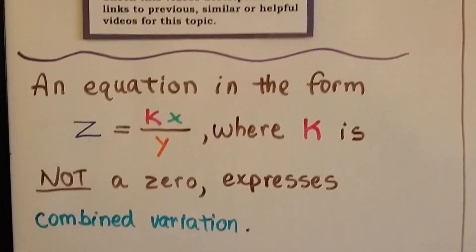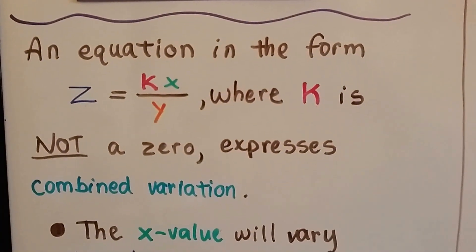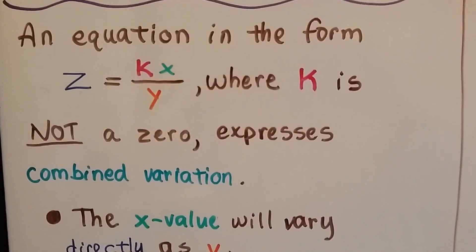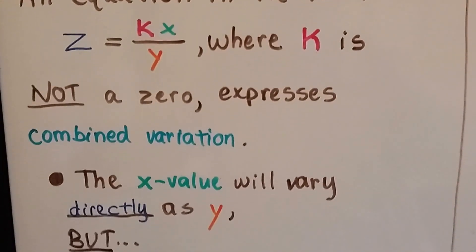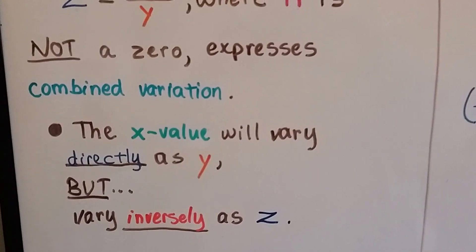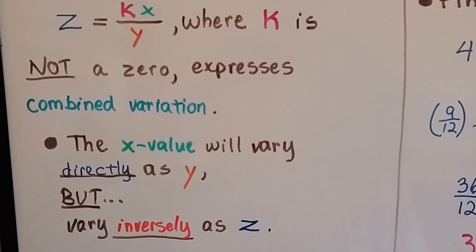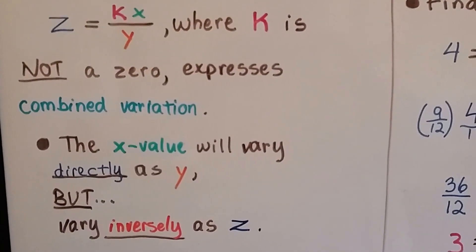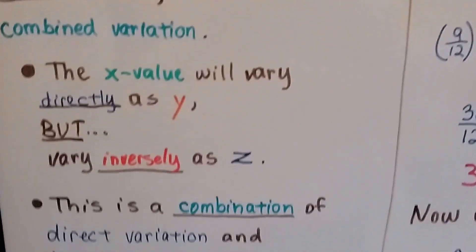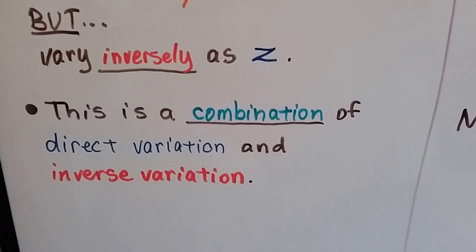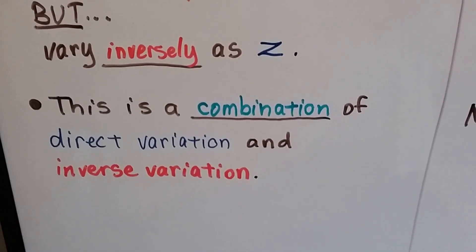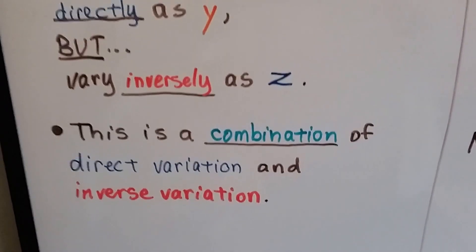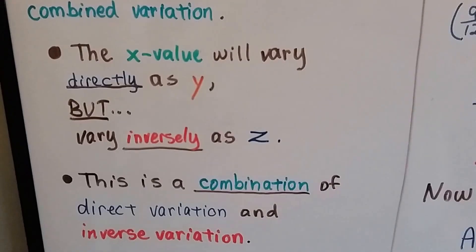An equation in the form z equals kx divided by y, where k is not zero, expresses combined variation. The x value will vary directly as y, but inversely as x. This is a combination of direct variation and inverse variation. That's why it's called combined variation.